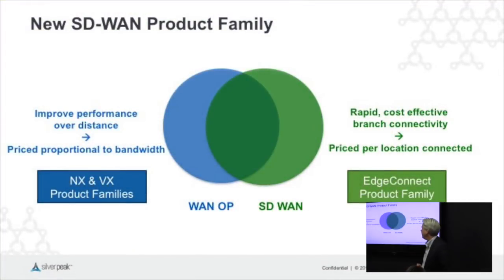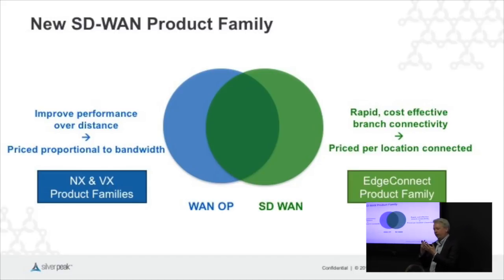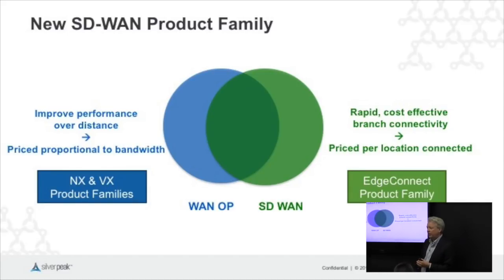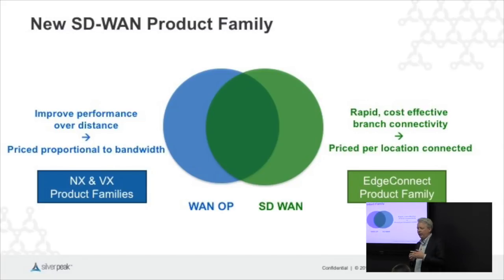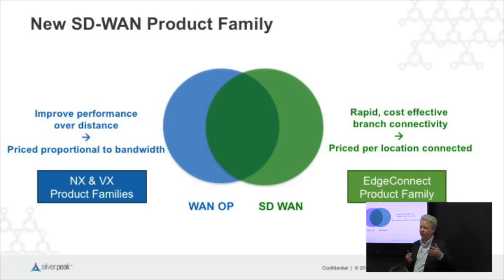For a lot of people SD-WAN means different things. I think about SD-WAN and WANOP as intersecting each other. The traditional value proposition for WAN optimization is about delivering performance and consistency across distance — whether between data centers or between a data center and branches, that's what WANOP is all about.